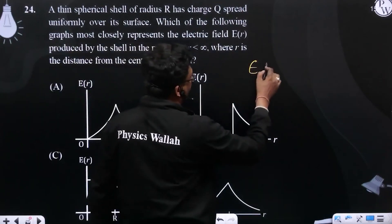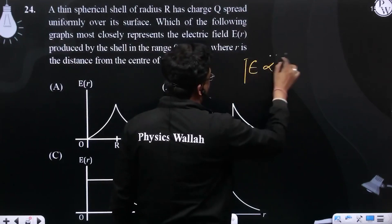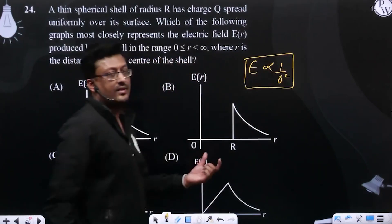That is your electric field of distance which is related to this direction. So for this, option number B is closely correct.